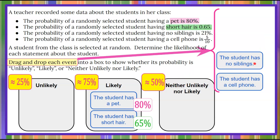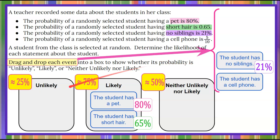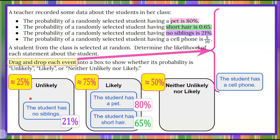Now, the randomly selected student having no siblings is 21 percent. 21 percent is closest to approximately 25 percent, so we're going to move 'student has no sibling' to being an unlikely occurrence.